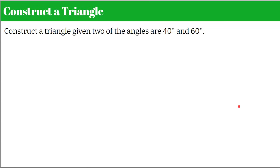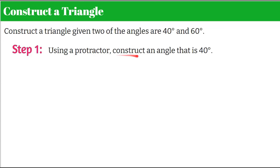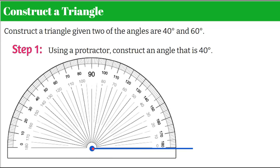Let's use this theorem. We're going to construct a triangle given just two angles — you only need two to construct a triangle and a protractor. We're going to make a 40 degree angle and a 60 degree angle and form a triangle. Step one: using a protractor we're going to construct an angle that is 40 degrees. We're going to draw a line segment and I'm drawing a little dot here to make my vertex. Now I'm going to bring in my protractor and line up my vertex in the center.